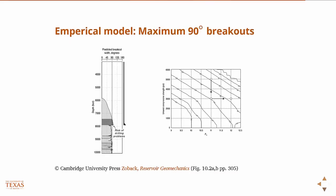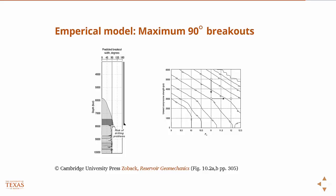Using this empirical model — allowing a maximum of 90-degree breakouts — you can build a geomechanical model that tells you exactly where you will exceed that 90-degree region. In this example, they built the model and determined that between 7,500 and 8,000 feet they would exceed 90-degree breakouts. Therefore, they set casing to that depth to prevent collapse.